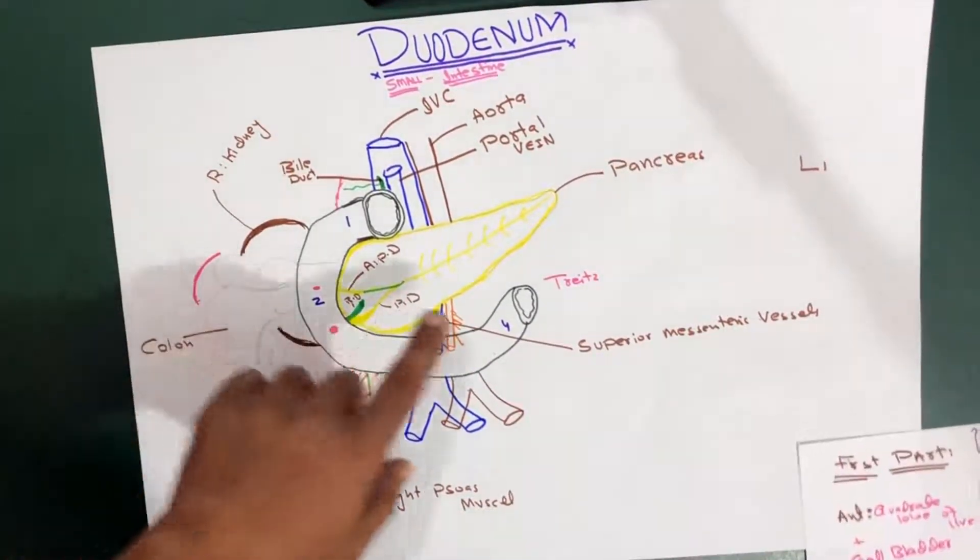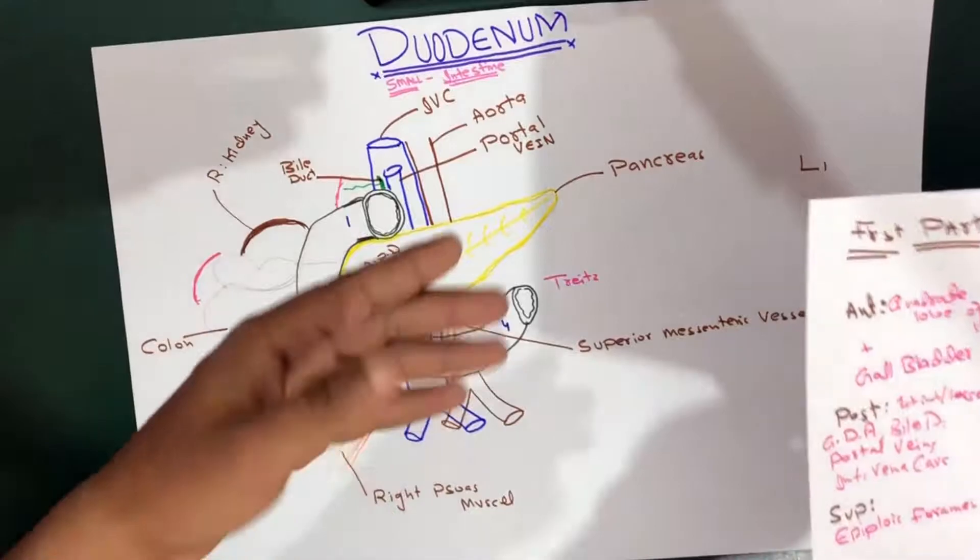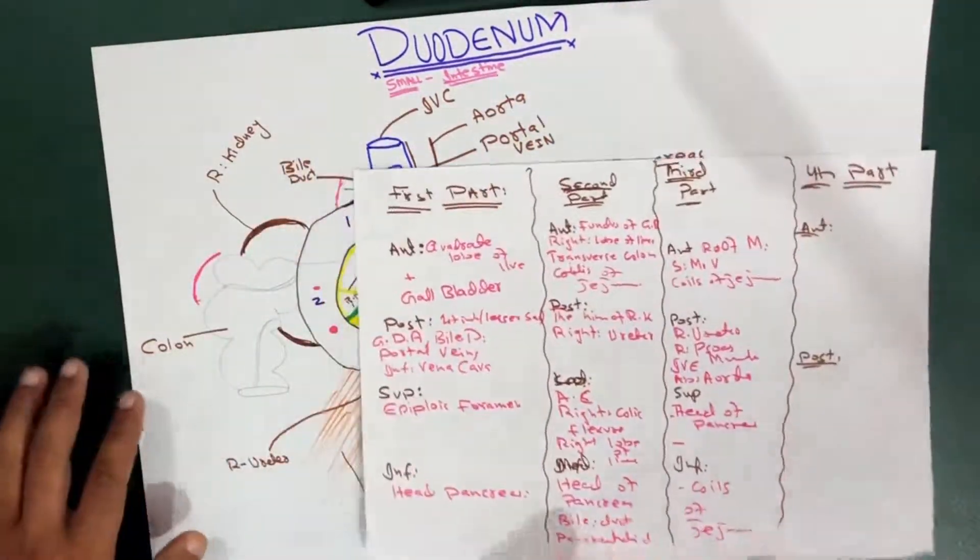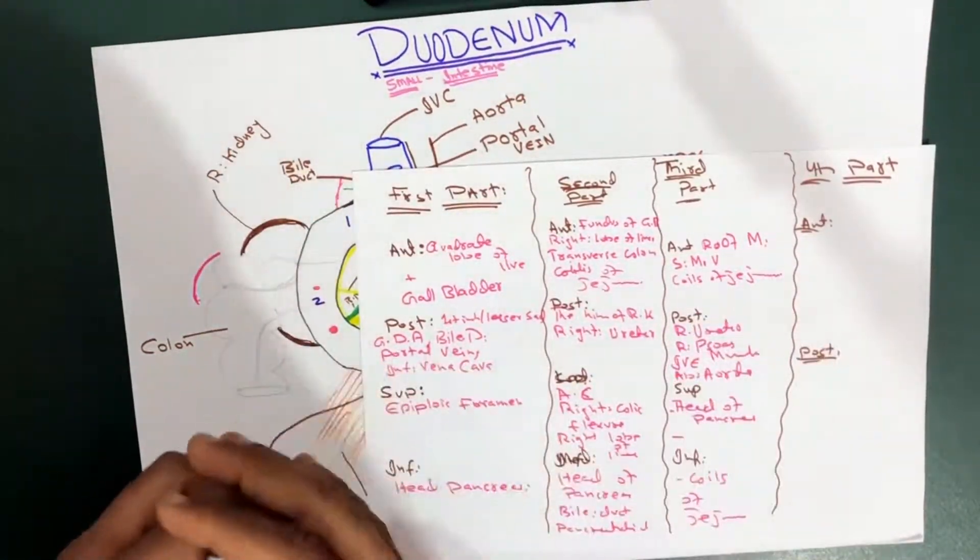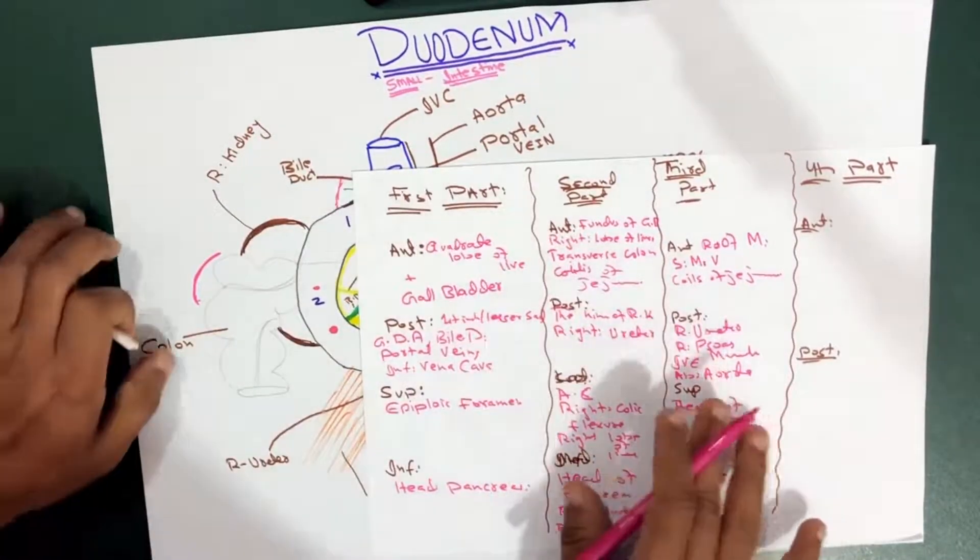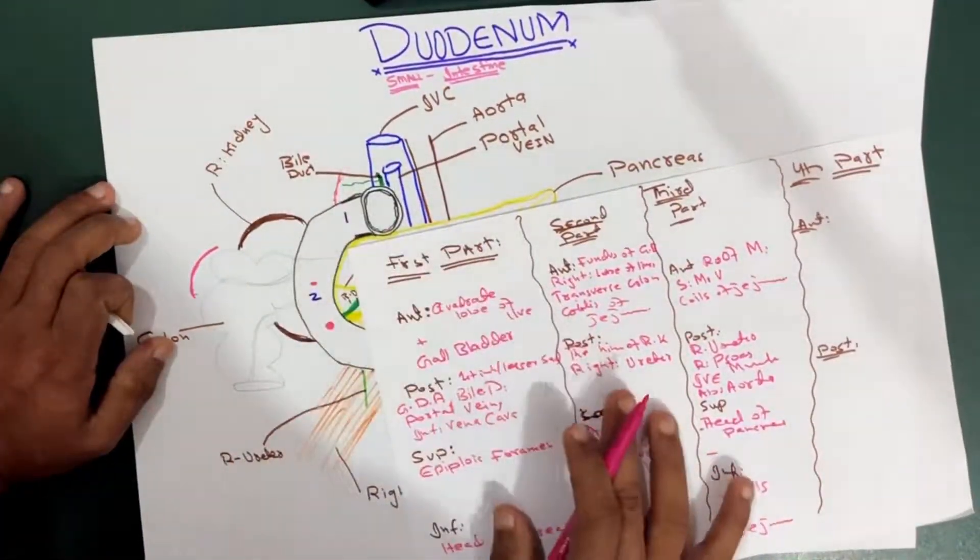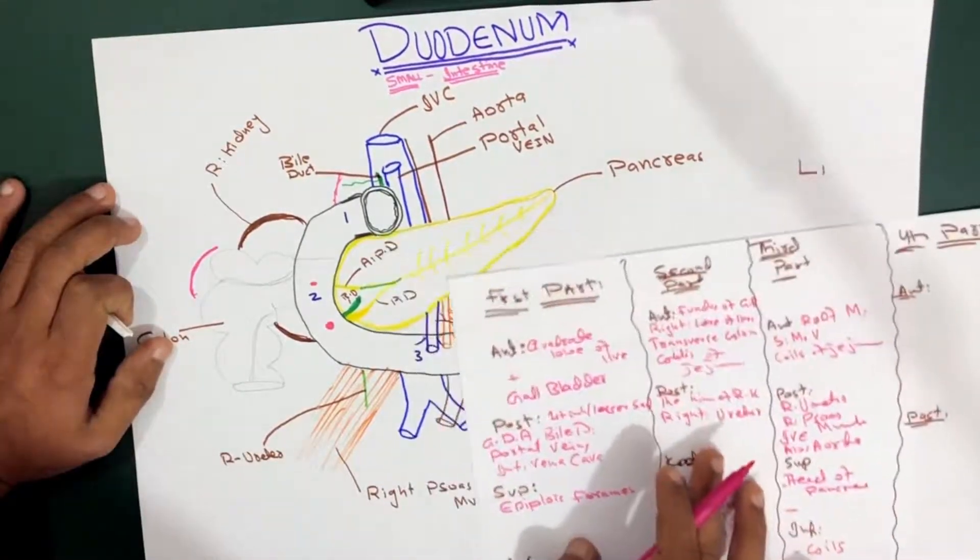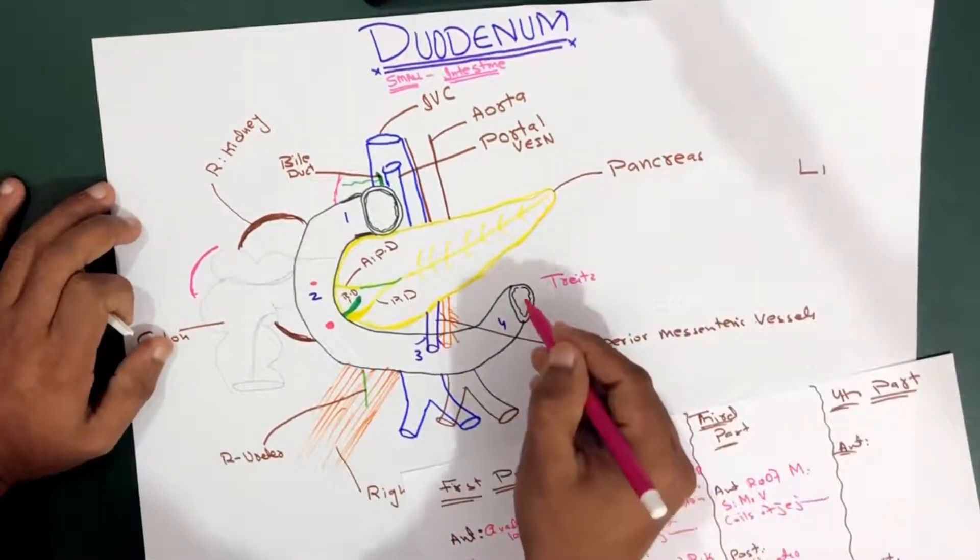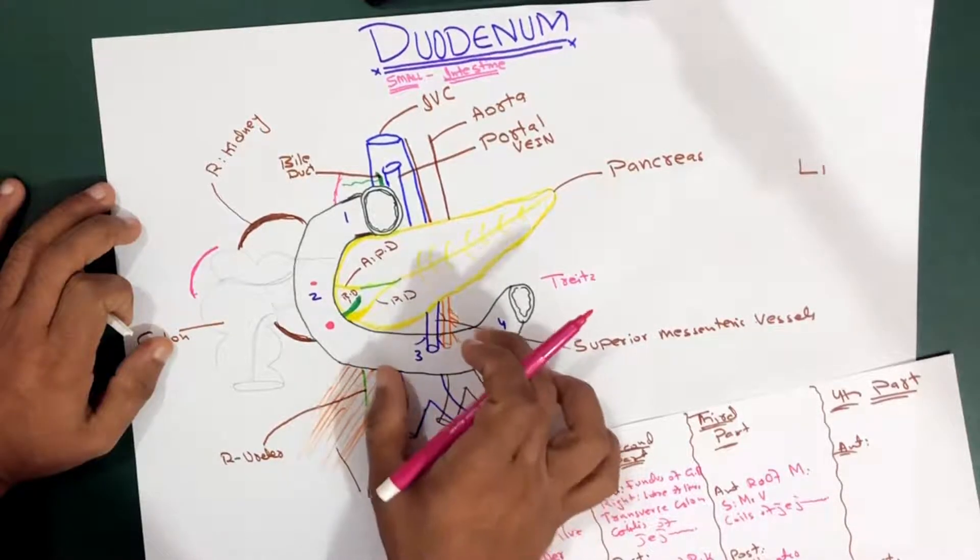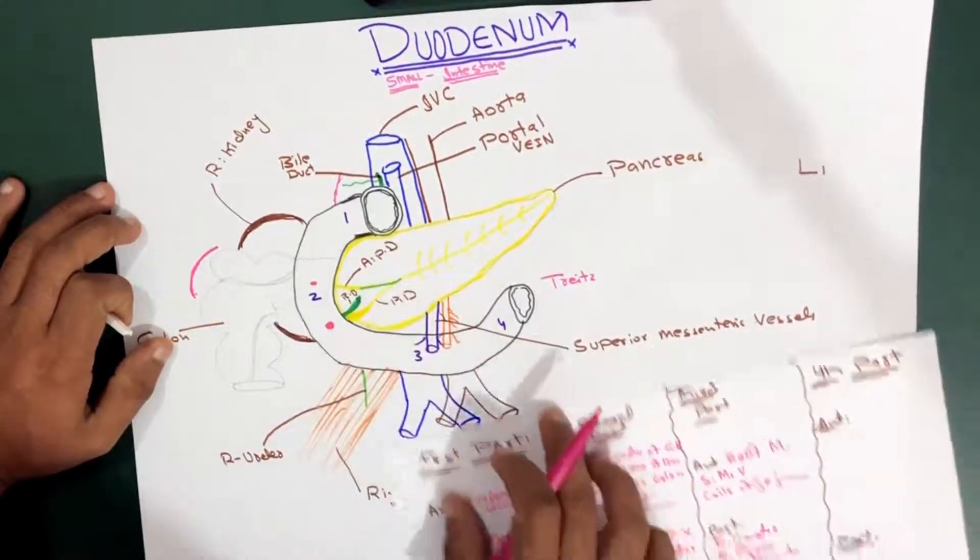So this is it regarding the theory. Now let's talk about the relations of the duodenum to different parts. Remember, anteriorly we have the beginning of the root of mesentery. The root of mesentery starts here and crosses this way, so it is crossing anterior to the third part, but at the fourth part it actually starts here at the flexure.